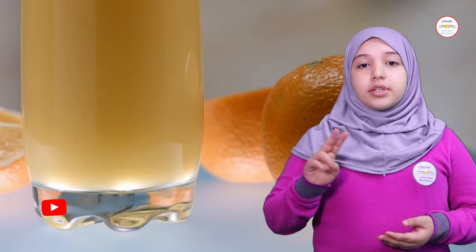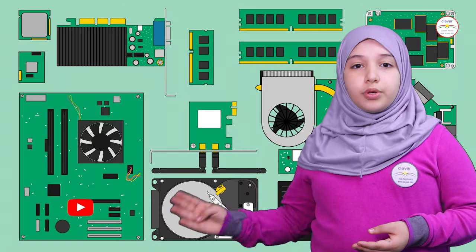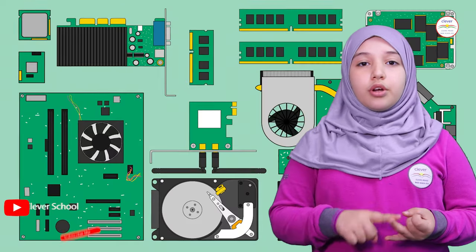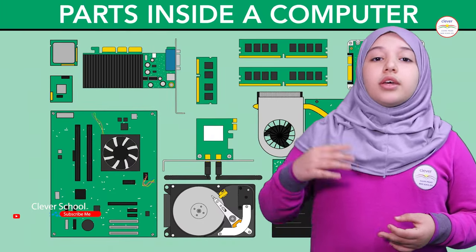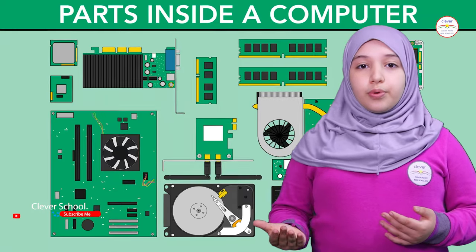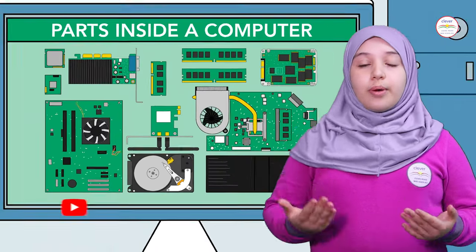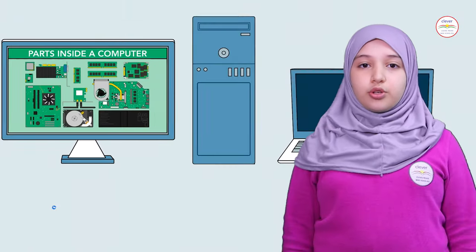We have two main parts of a computer: software and hardware. Software is an operating system on the computer and programs — we can't touch software.